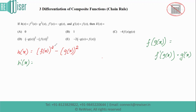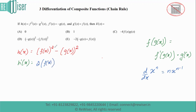Since we have something to the power of two, we also apply the power rule. The power rule states that the differentiation of xⁿ is n times x to the power of n minus one. So f(x) whole square differentiates to 2 times f(x) to the power of one, and then by the chain rule we multiply by f'(x).